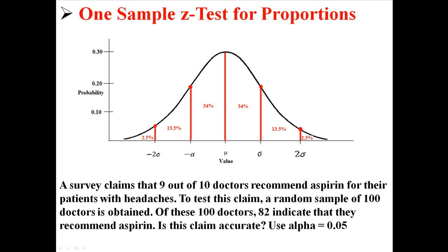Our question: a survey claims that 9 out of 10 doctors recommend aspirin for their patients with headaches. To test this claim, a random sample of 100 doctors is obtained. Of these 100 doctors, 82 indicate that they recommend aspirin. Is this claim accurate? Use alpha = 0.05.